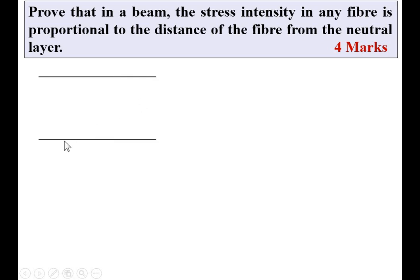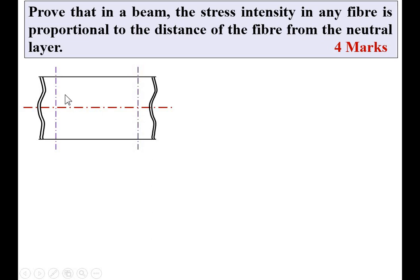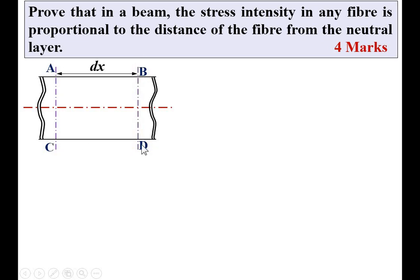Consider this beam — the symbol shows a cut-out length of the beam, and this is the neutral layer. For analysis, I have taken a section here, so my focus length of the beam is this only. This highlighted length is called dx — a very small length of the beam — and we give it the name ABCD, with section AC and section BD. In between these two sections is the length dx, which is very small, and this is the neutral layer NL, with a small elemental strip PQ for analysis.